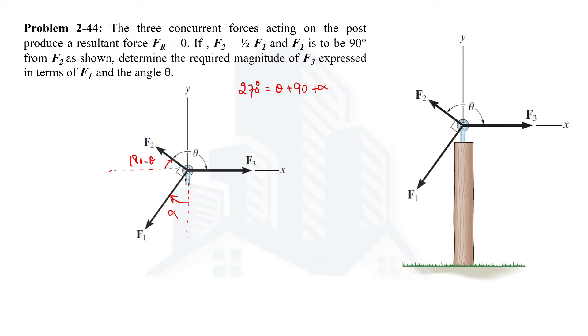You can see theta up to F1 force, 90 from F2 to F1, and alpha angle which is required. So from here we can see that alpha would be equal to 180 minus theta, the same as that of F2 making with the negative x-axis. That makes sense because they make an angle of 90 degrees with each other.